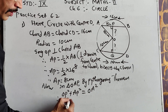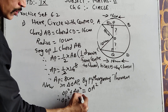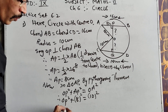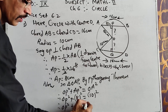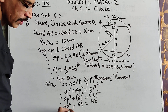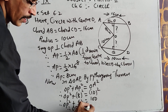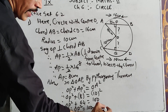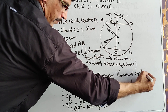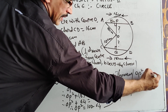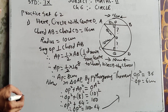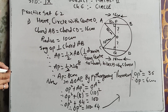OP squared is unknown; AP is 8, so 8 squared; OA is 10, so 10 squared. Therefore OP² + 64 = 100. 64 goes to the other side as minus, so OP² = 100 − 64 = 36, and therefore taking the square root, OP equals 6 centimeters.